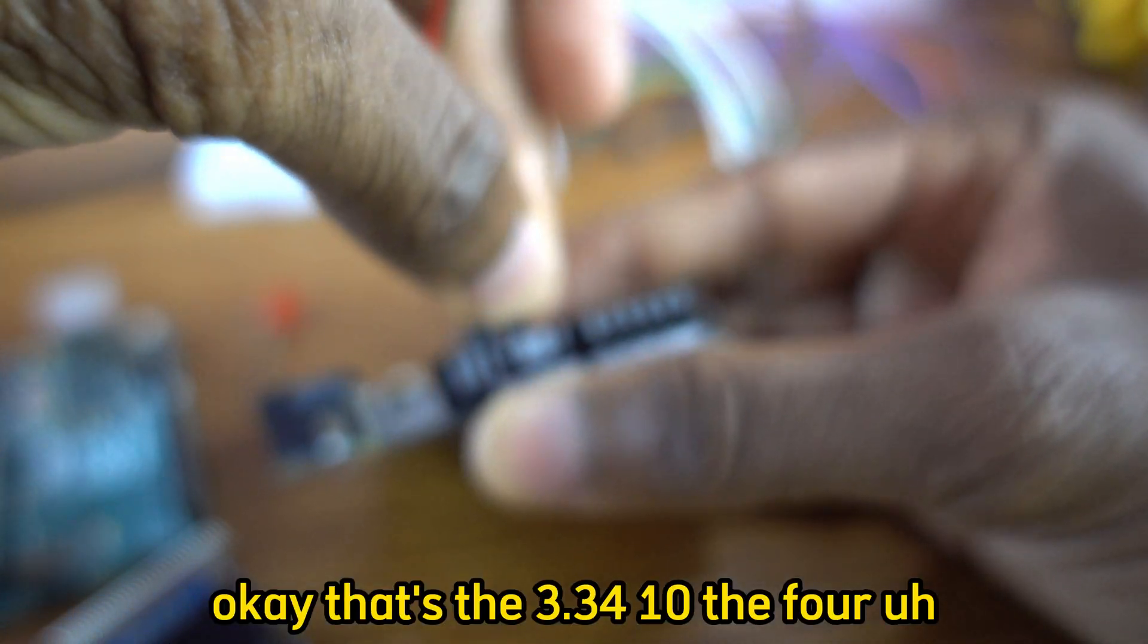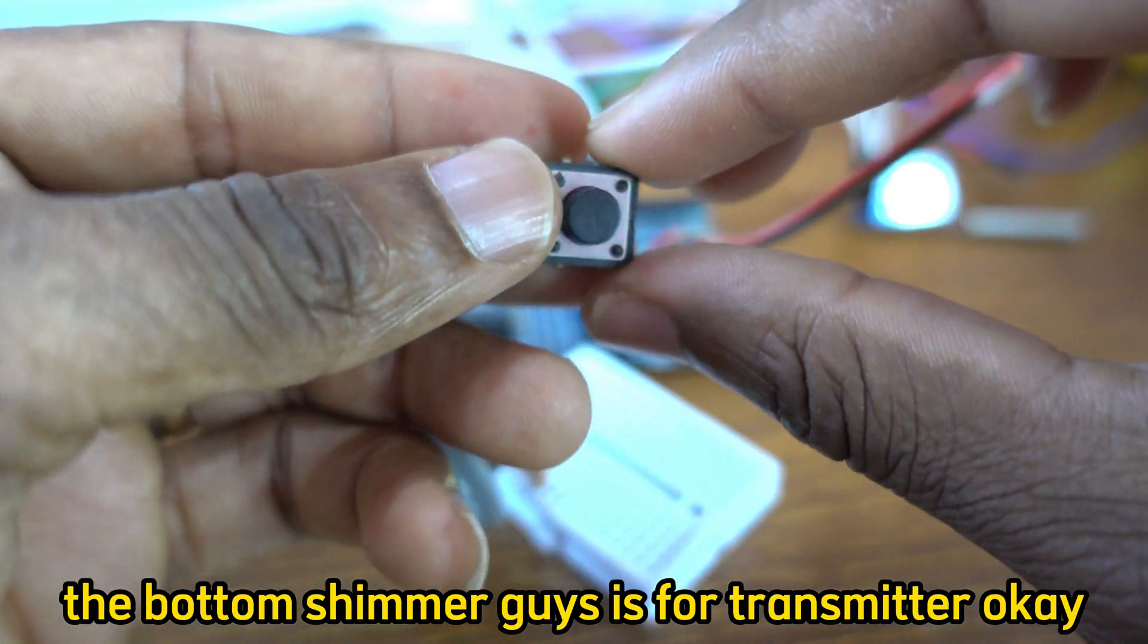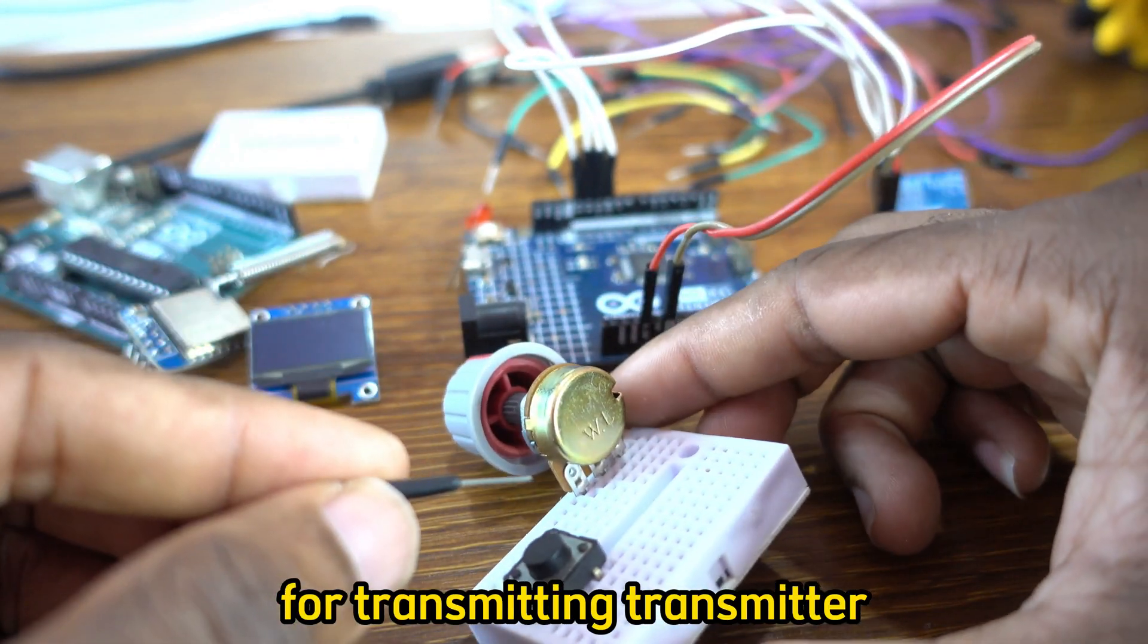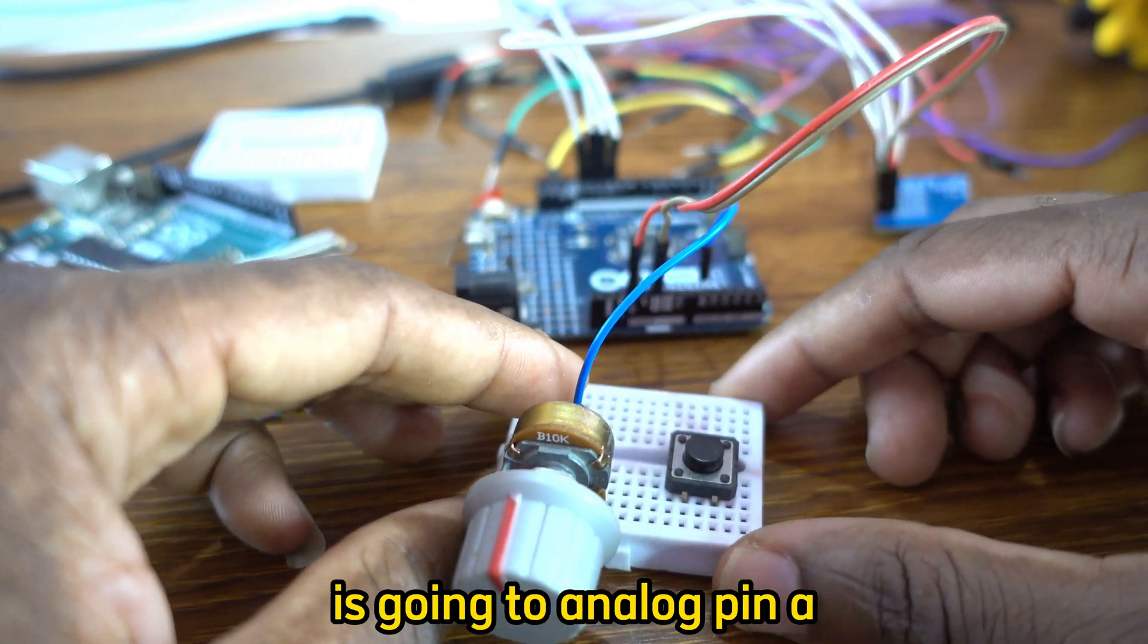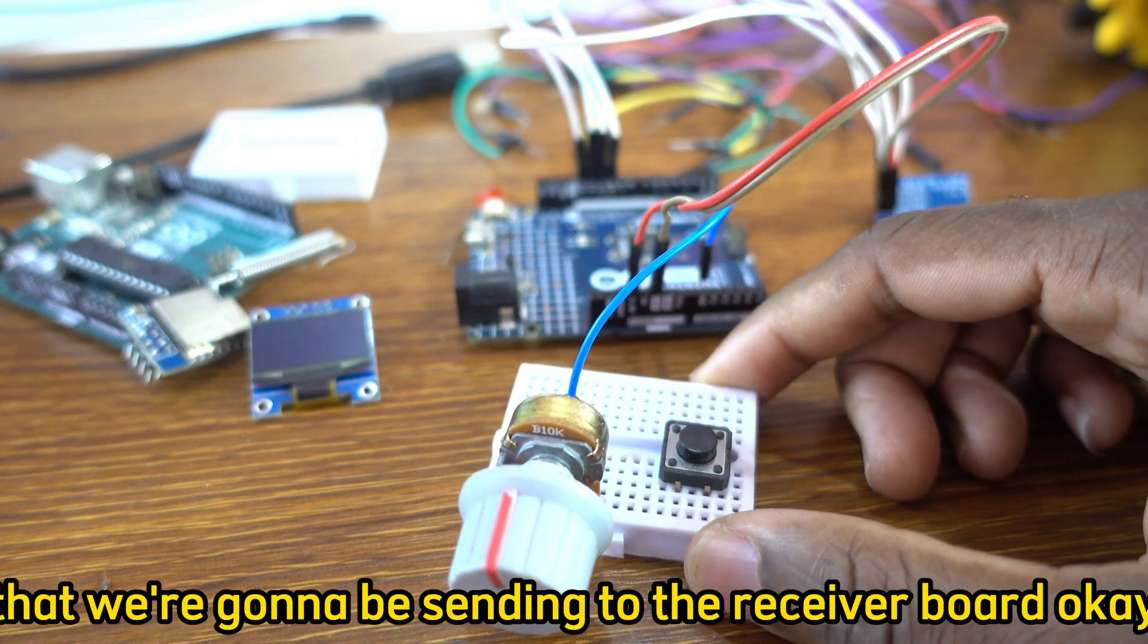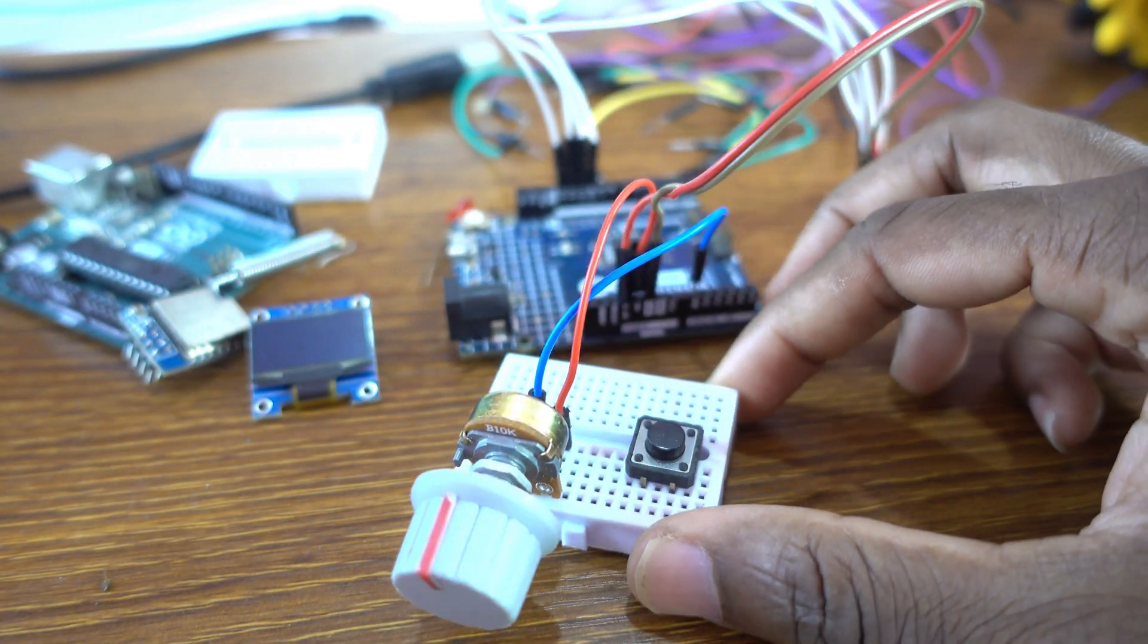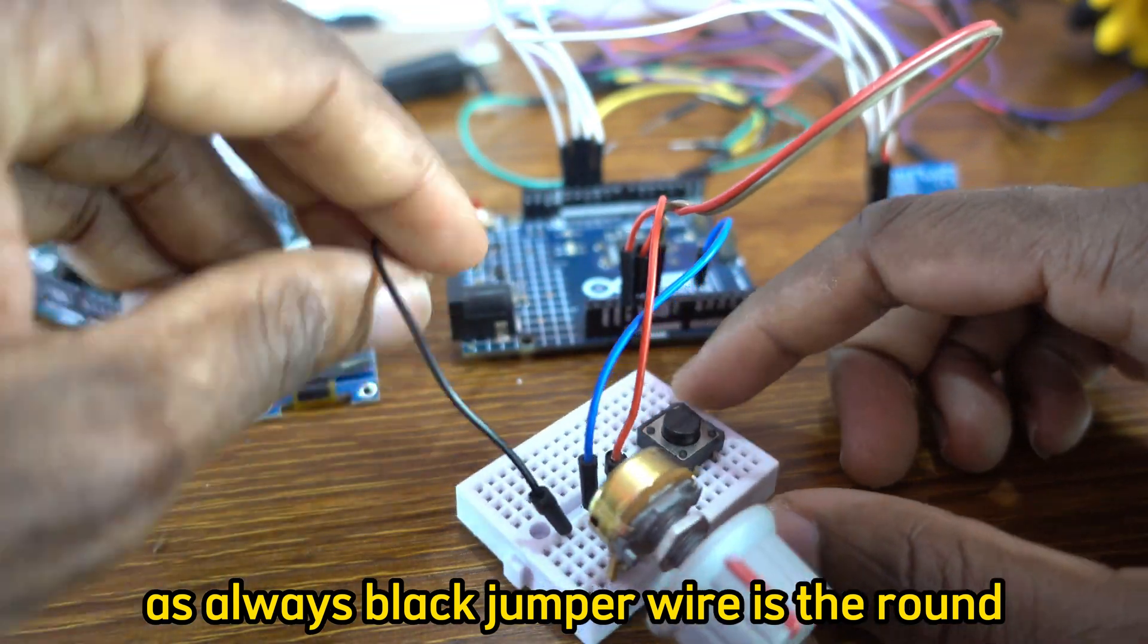So use instead 3.3 volts for powering. That's the 3.3 volts and of course the ground. Now I need to connect my - the potentiometer guys is for transmitter. The potentiometer and the push button, so I connect them on the same breadboard for transmitter. Now that's the middle pin of this potentiometer, it's going to analog pin A0 to produce digital number that we're gonna be sending to the receiver board. That's the power - we connect this jumper to 5 volts. Of course, as always, black jumper wire is the ground.